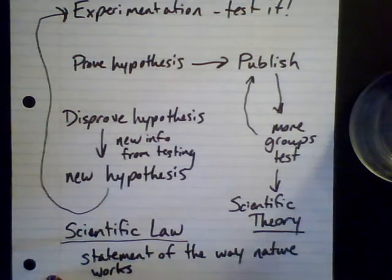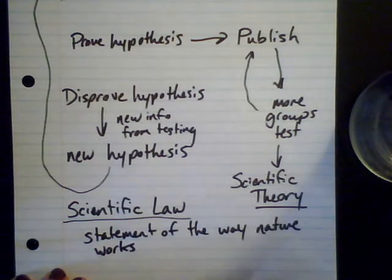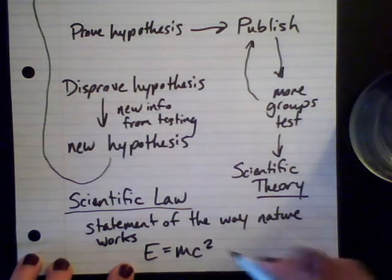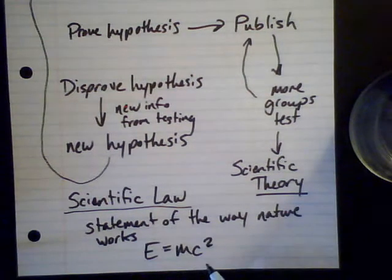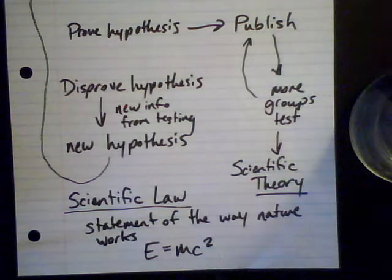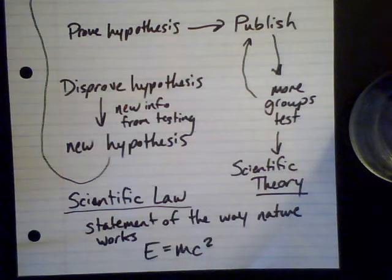A scientific law is usually pretty brief and combines together a lot of scientific theories — it's the culmination of multiple works, with multiple theories put together. For example, E = mc² — energy equals mass times the speed of light squared. That's a statement of the way we understand nature to work: energy and mass are related. It's not absolute truth, just a relationship that tends to work over and over again, confirmed by everyone who has tested it.